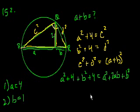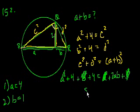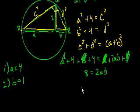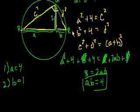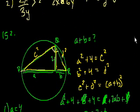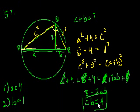Subtract A squared from both sides and subtract B squared from both sides. This simplifies nicely: 4 plus 4 equals 8, and that equals 2AB. Divide both sides by 2 and you get AB equals 4. So all of this — the semicircle, the altitude of 2, A and B — reduces to AB equals 4.